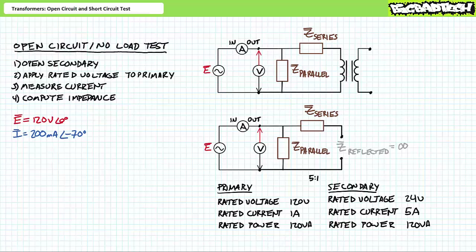This is the vampire leakage current discussed in the non-ideal transformers lecture — any power consumed by this unloaded transformer is going to waste. An application of AC Ohm's law demonstrates the parallel impedance inside the transformer equivalent circuit is 600 ohms at an angle of 70 degrees. Which portion accounts for hysteresis? Which accounts for eddy currents? We don't know and we don't care — all of these factors and more are rolled up into one quantifiable property inside the transformer equivalent circuit.